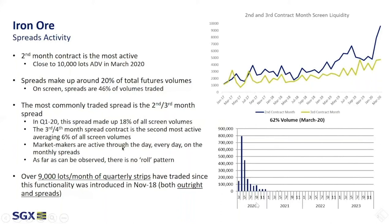SGX's iron ore market is a very typical commodity market, very similar to oil or base metals, where the majority of liquidity is concentrated at the front of the curve. This is slightly different to DCE, where volumes are mostly concentrated in two months — January and September — and occasionally in May.